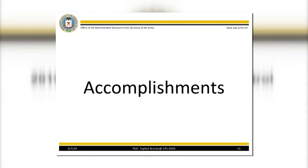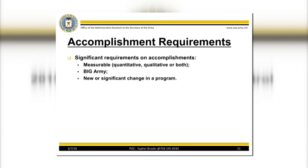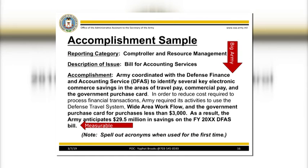Next, we will cover Organizational Accomplishments, Appendix E. Your accomplishments should be the most significant internal control program and related accomplishments achieved during the previous 12 months. This brief summary may be selected for reporting in the Army's ASOA. Your accomplishment should include the following elements: measurable — you must have data or metrics to support your accomplishment — and Big Army, meaning it must impact Army-wide or represent a new or significant change in a program. Here is an example of a good MICP accomplishment. The red arrows indicate the Big Army and measurable requirements.